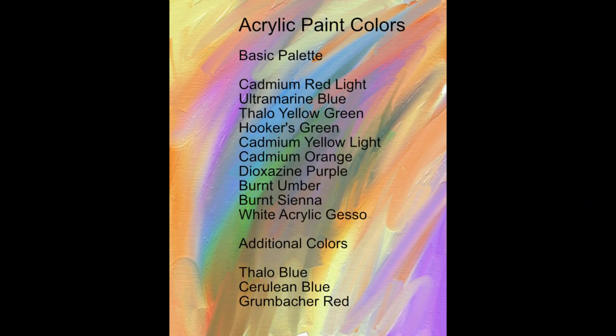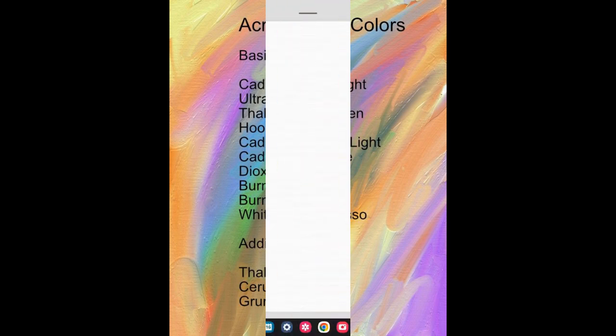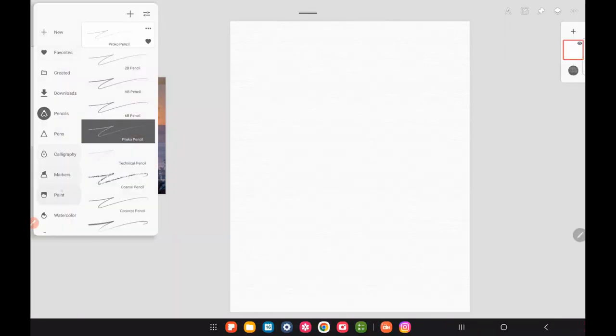Here are the colors that I use. Most of these are Grumbacher or Academy paint, but you can also use Liquitex and Holbein and several different other kinds. It just depends on what you want to use.